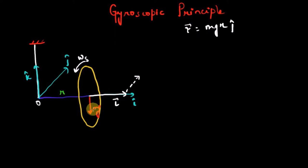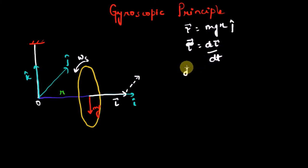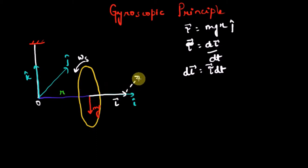This external torque due to weight mg is mgr ĵ. We know that torque is the rate of change of angular momentum. Let's assume this external torque acts for a very small time interval dt. In that small interval, the additional angular momentum is dL = τ dt. The direction of this additional angular momentum dL is the same as the direction of the torque, which is ĵ.